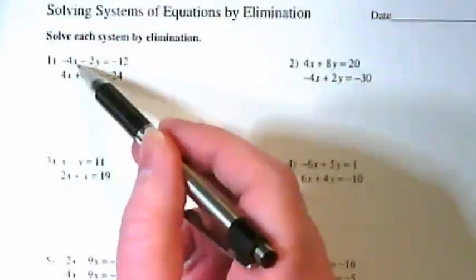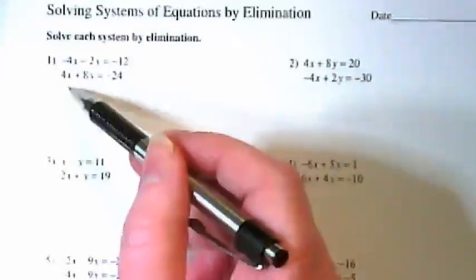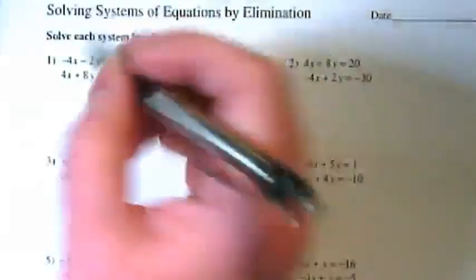If I can look at this and see that this is a negative 4x and this is a positive 4x, that means I can eliminate these two.